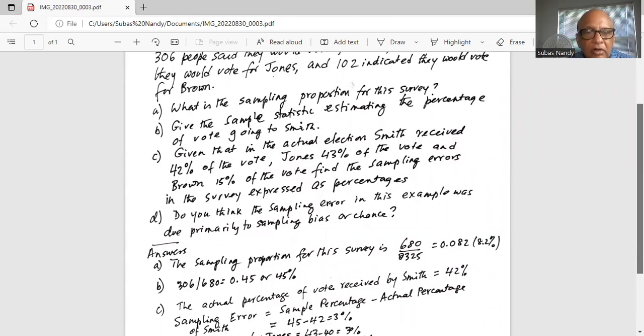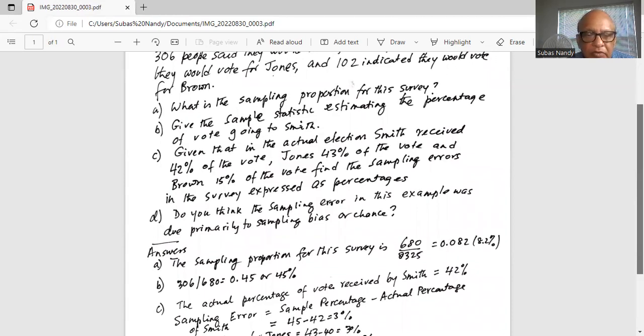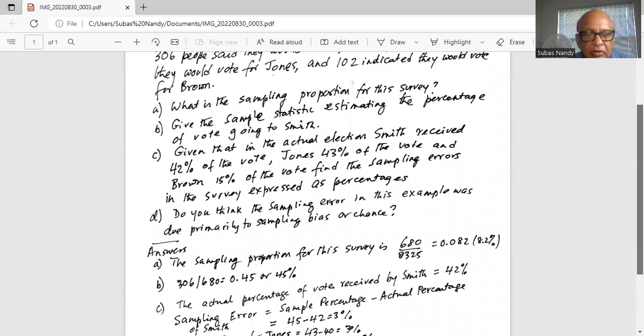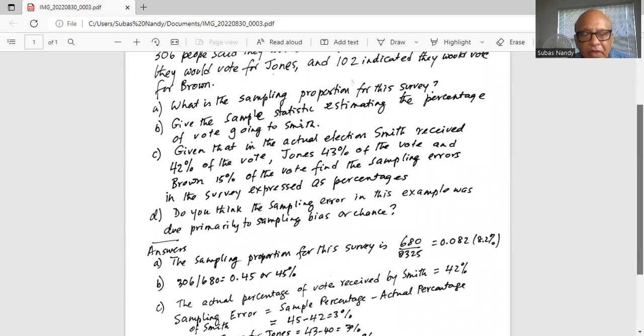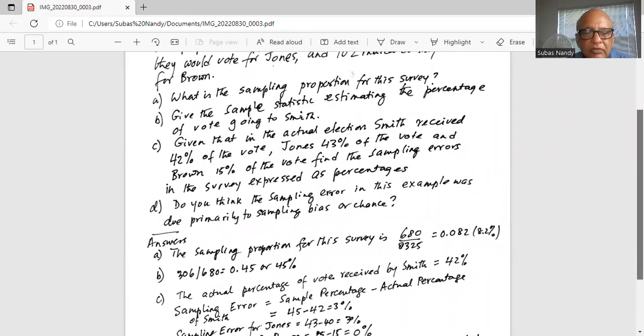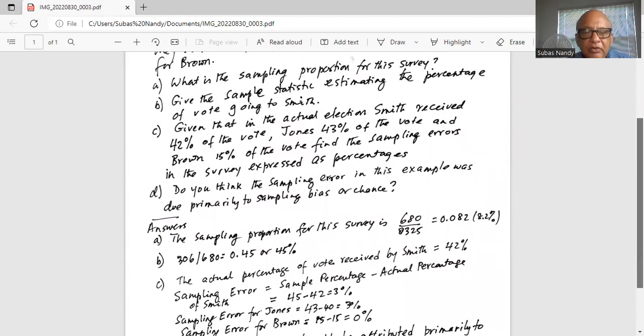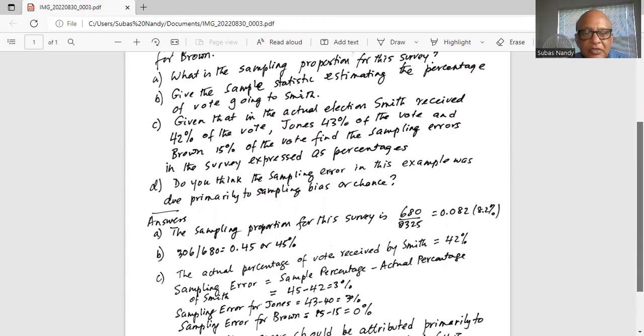And what was the sampling proportion? Sampling proportion was 45 percent. So what is the sampling error? Sample proportion minus actual percentage. Sample proportion minus actual proportion is 45 percent minus 42 percent, which equals 3 percent. So that is the sampling error for Smith.